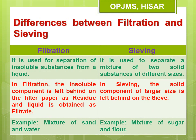Filtration and sieving look almost similar, but there is an important difference. Filtration is used for separation of insoluble substances from a liquid, whereas sieving is used for a mixture of two solids that differ in size. In filtration, the insoluble component is left behind on the filter paper as residue and the liquid is obtained as filtrate. In sieving, the larger component is left behind on the sieve while the smaller component passes through the holes and is collected at the bottom.